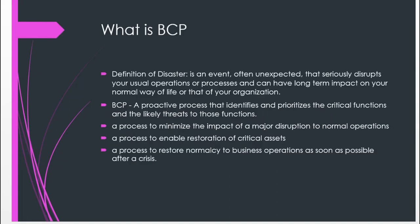Let's start by defining what business continuity planning is all about, and in the process we're going to define a disaster. Business continuity planning is a process used to identify and prioritize critical functions, services, or systems in our environment, and the threats that are likely to affect those various functions. It is also a way of minimizing the impact of major disruptions to normal operations — this is where the issue of disasters comes into play — where we are trying to mitigate against the adverse effects of any disaster that could affect our IT systems.